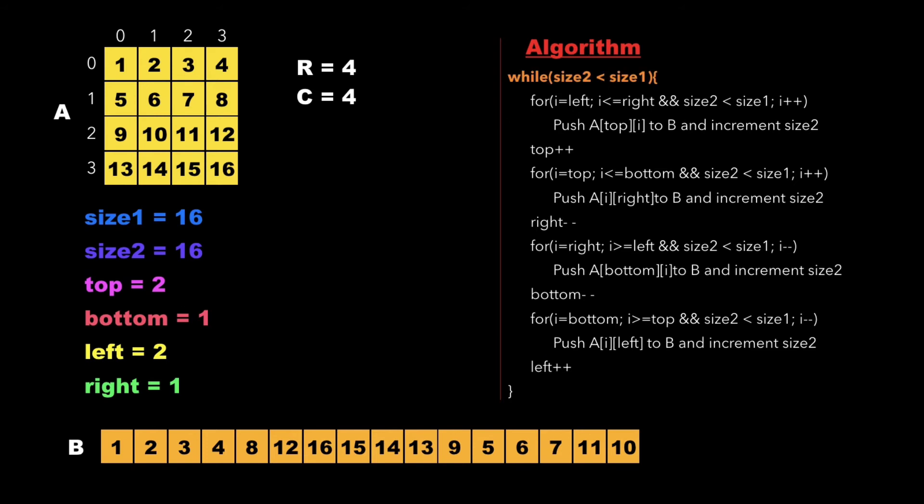Finally we check whether size2 is less than size1. Since size2 is not less than size1 we come out of the while loop, and we have the output array as 1, 2, 3, 4, 8, 12, 16, 15, 14, 13, 9, 5, 6, 7, 11, 10.